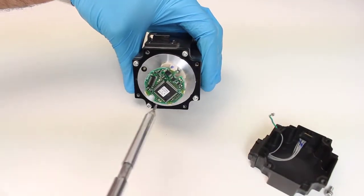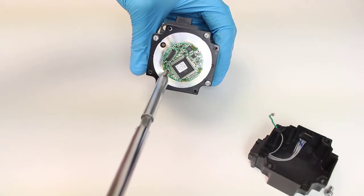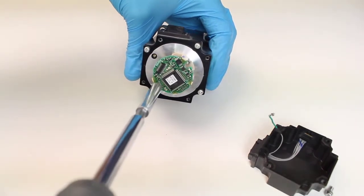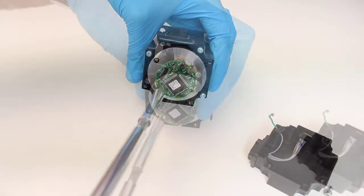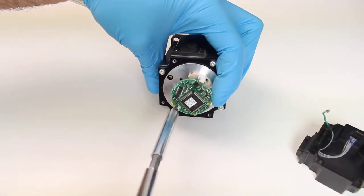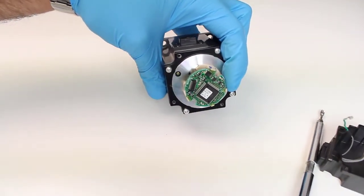Now remove both bolts holding down the encoder sensor and remove the sensor.